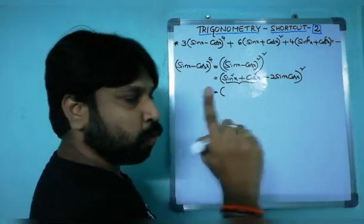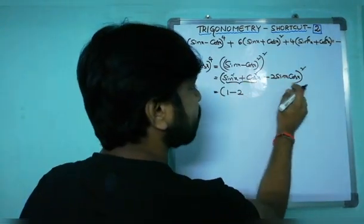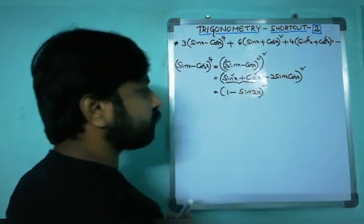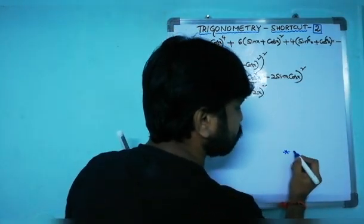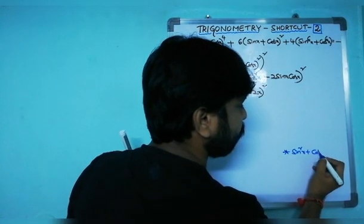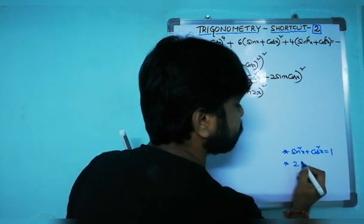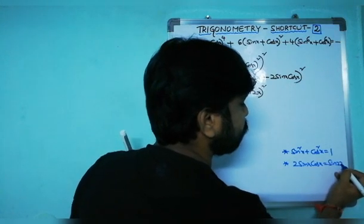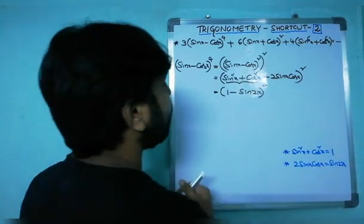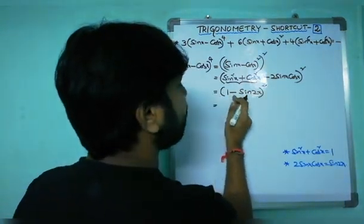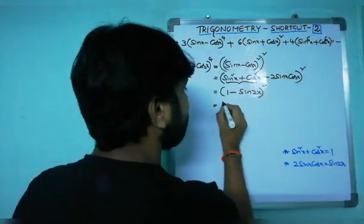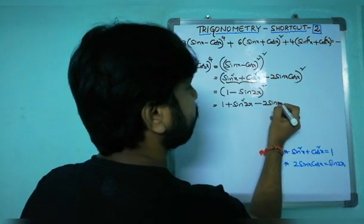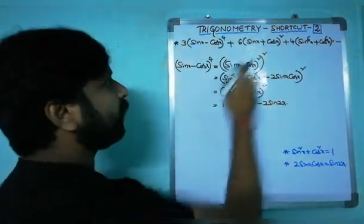Since sin²x + cos²x = 1, this becomes (1 - 2sinx·cosx)². Now 2sinx·cosx = sin2x, so this equals (1 - sin2x)². Expanding again using (a - b)² = a² + b² - 2ab, that is our simplification for the first part.